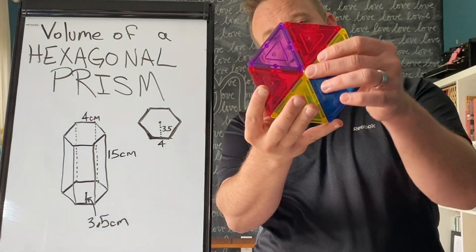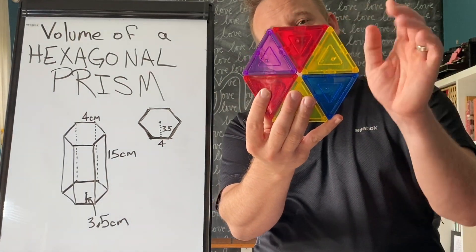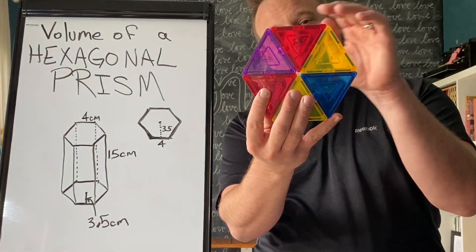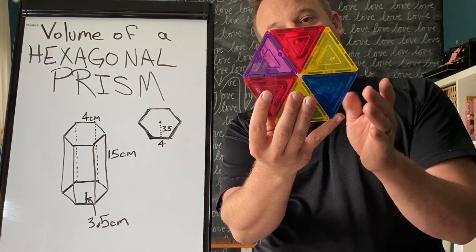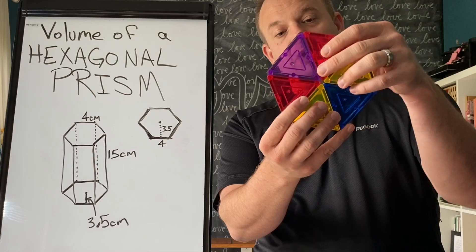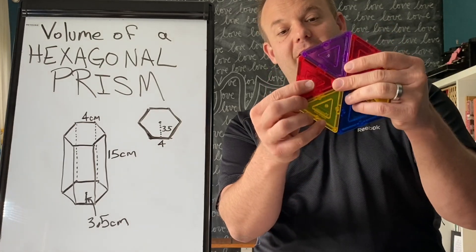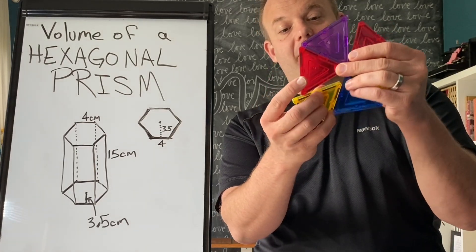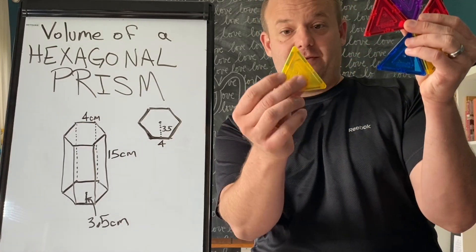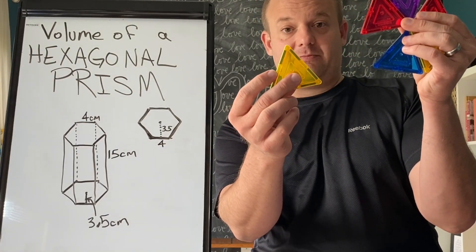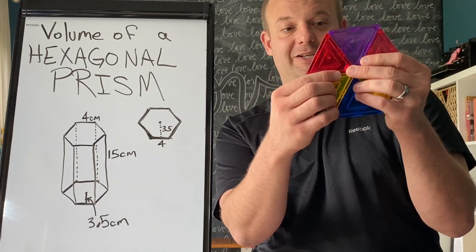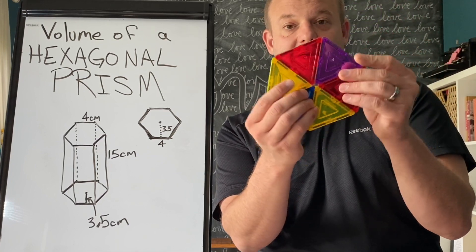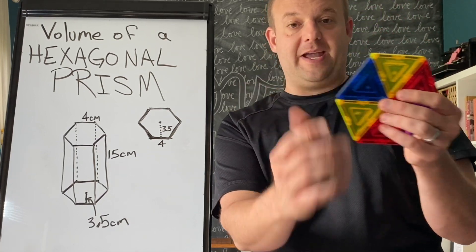You can see that it is made up of six congruent triangles. So if you find the area of just one of those triangles, you can multiply it by six, and you have the area of the base.